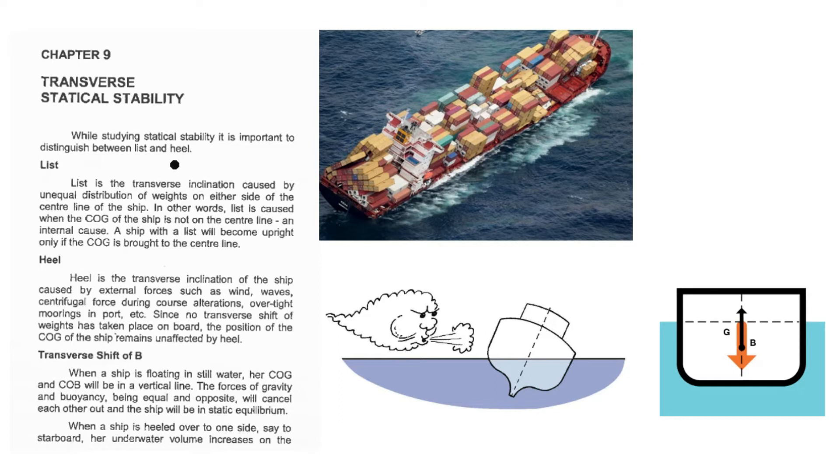So before starting statical stability, first we will see the important terms like list and heel. So what is the list? This is the transverse inclination caused by unequal distribution of weights. In this figure, you can see that the container load is unequally distributed due to its center of gravity is not in the center line, which is causing the list.